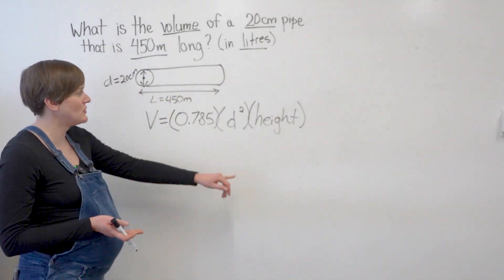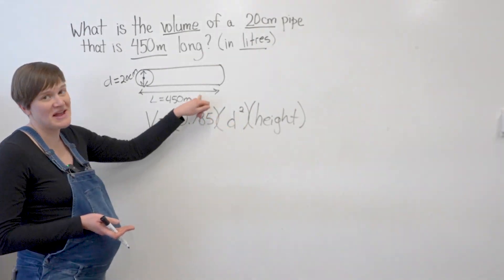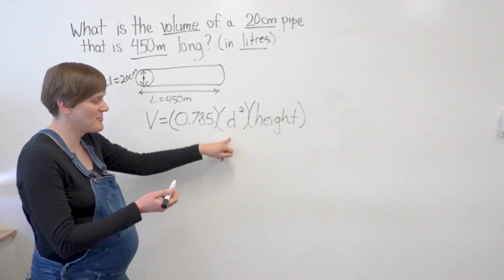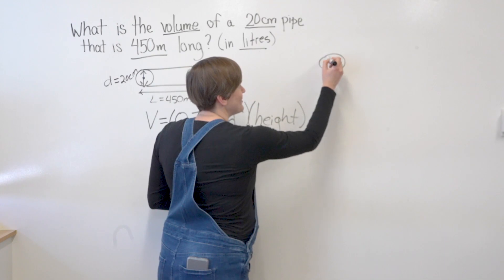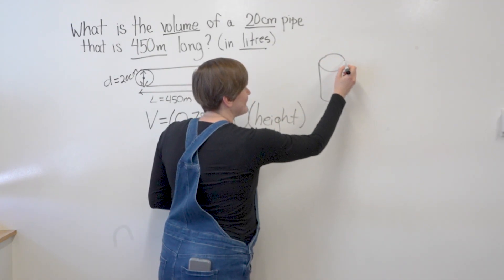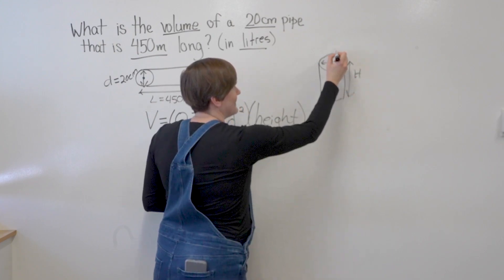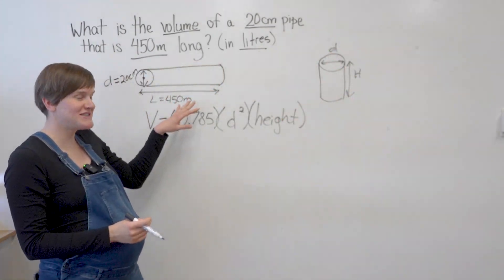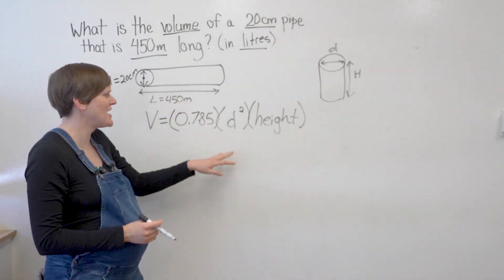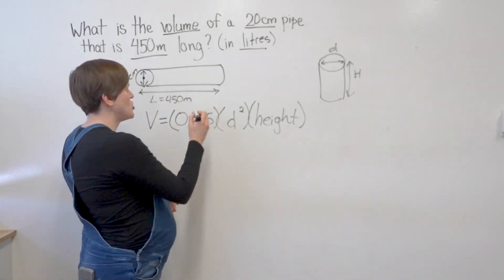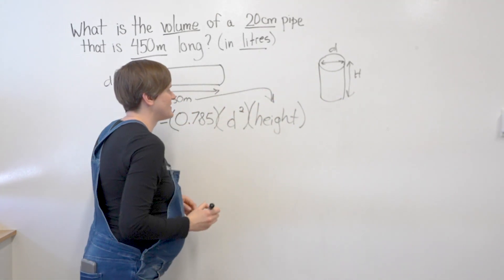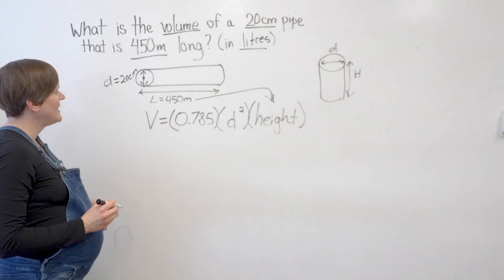Okay, we don't have a height here though. But we have a length. So for this formula, maybe it's written for doing a cylindrical tank like this when you'd have a diameter and a height. But we're just flipping it on its side. We've got a length now instead of height. We can use the same formula. We're just going to put the length into the height. Great.